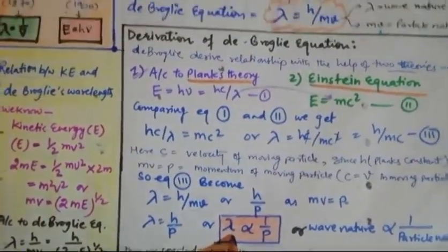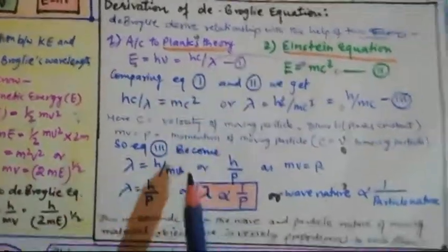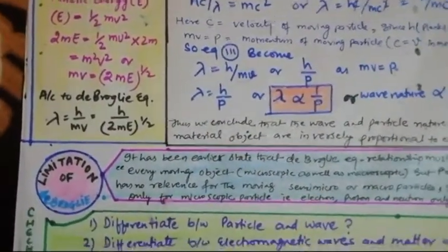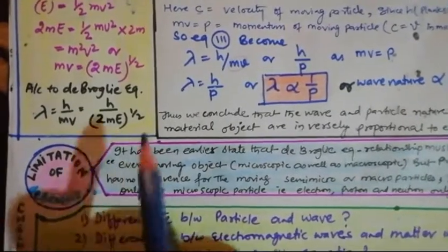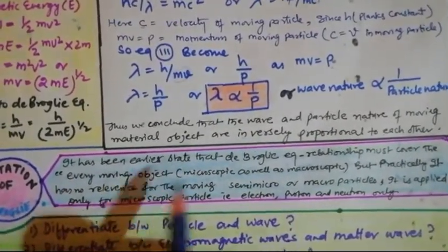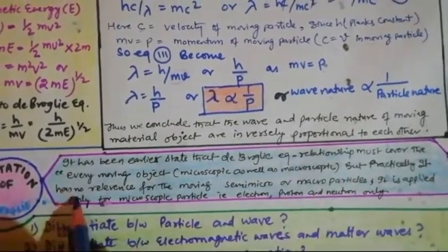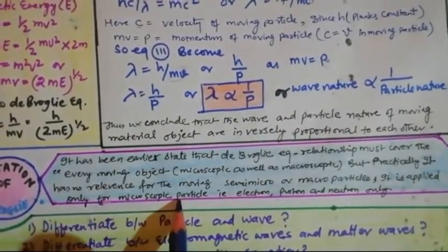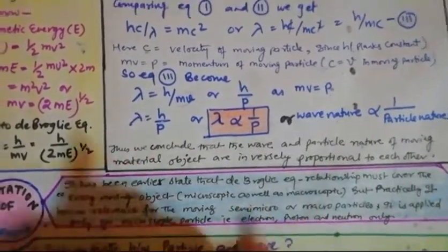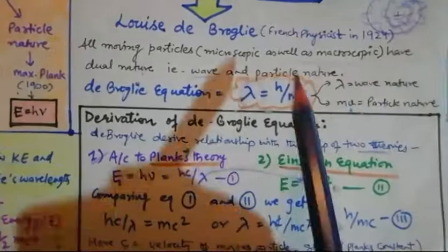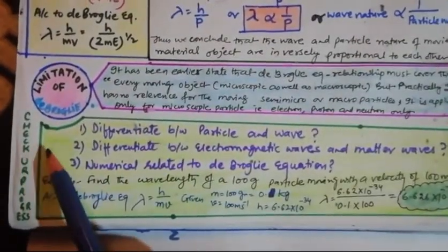Now let's discuss the limitations of the de Broglie equation. De Broglie originally stated that the relationship must cover every moving object — microscopic as well as macroscopic. But practically it has no relevance for macroscopic particles. It is applied only for microscopic particles — that is, for electrons, protons, and neutrons only, not for macroscopic particles. This was the biggest limitation of de Broglie's equation.